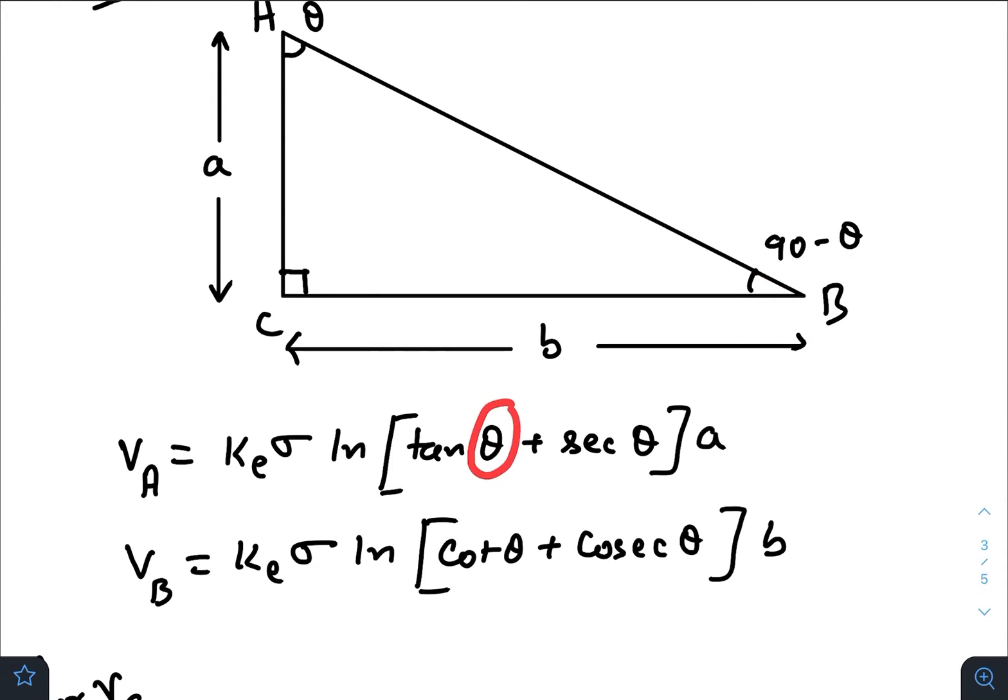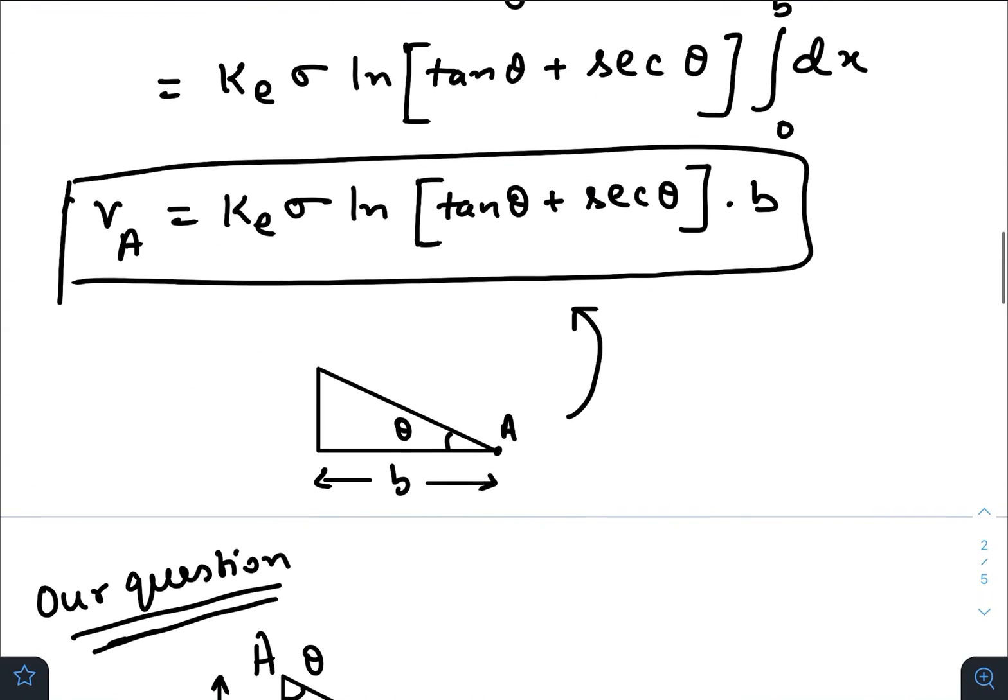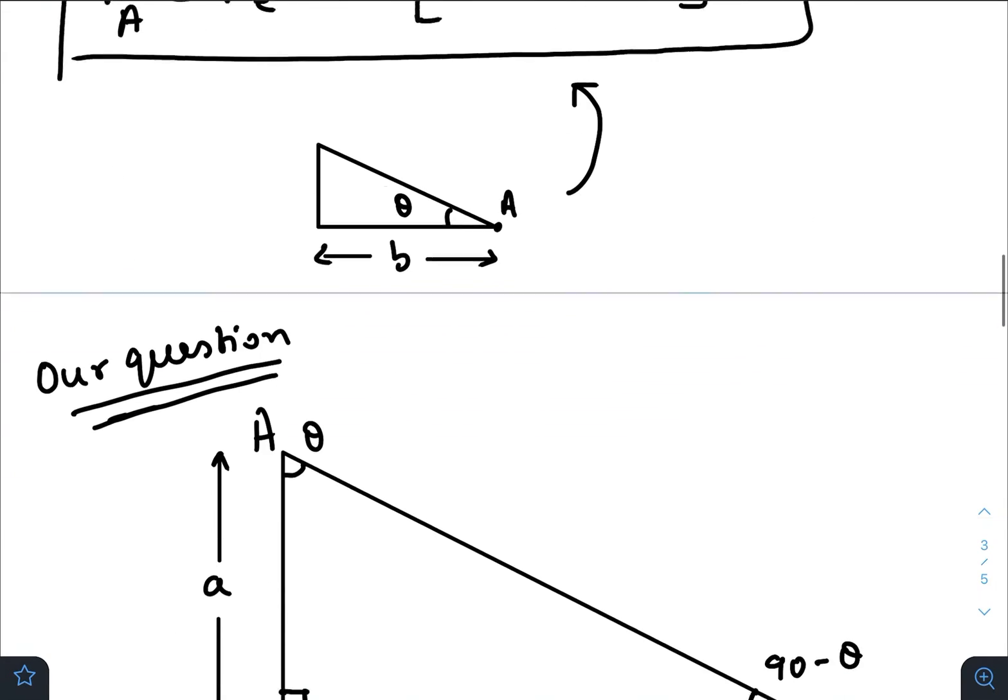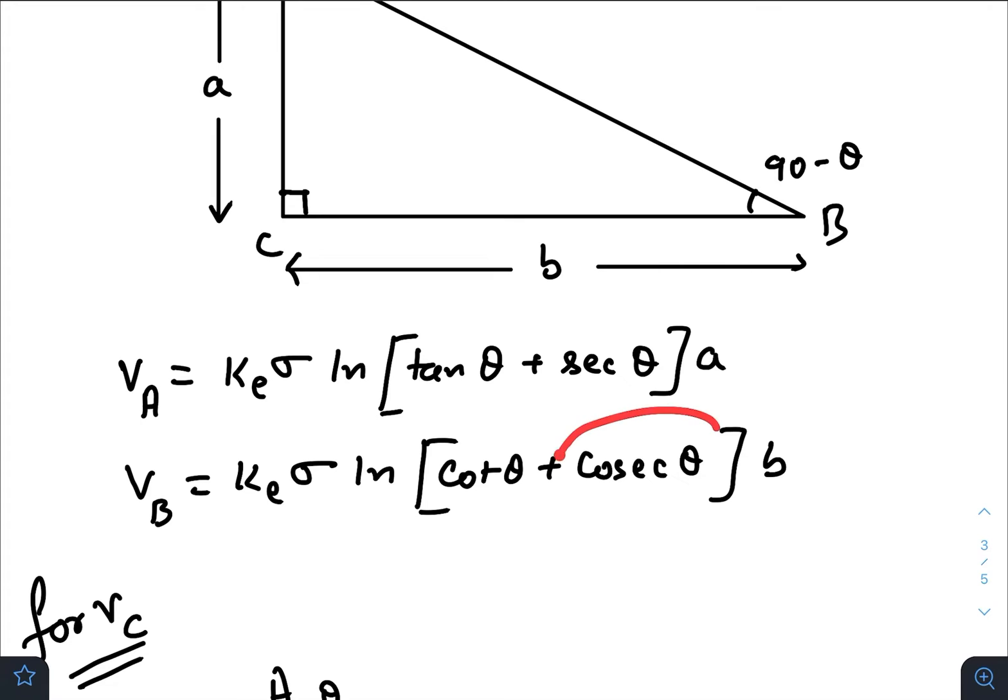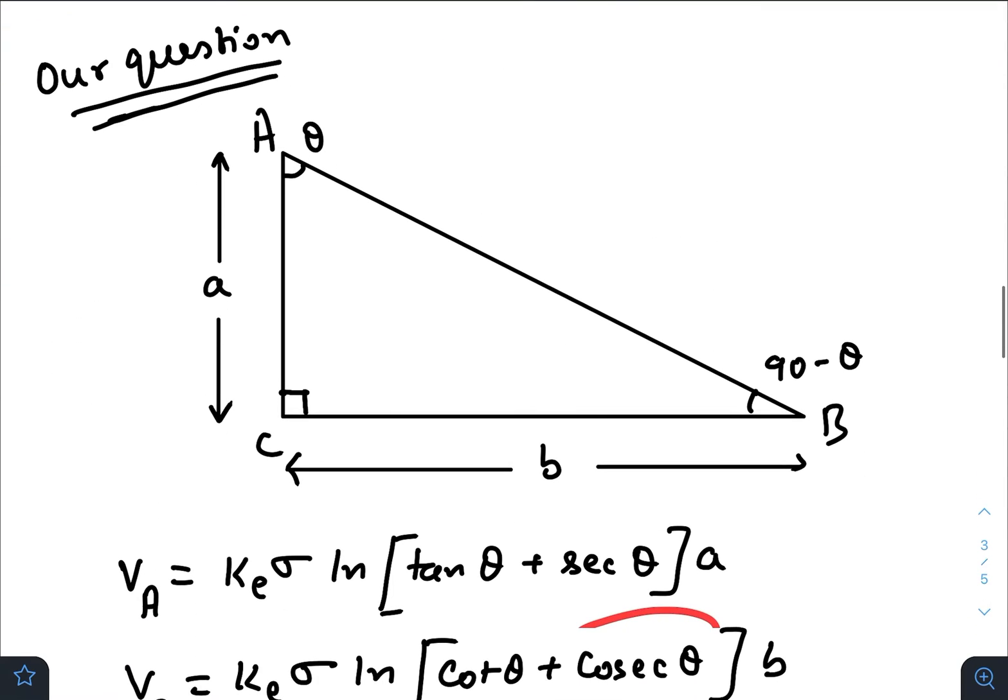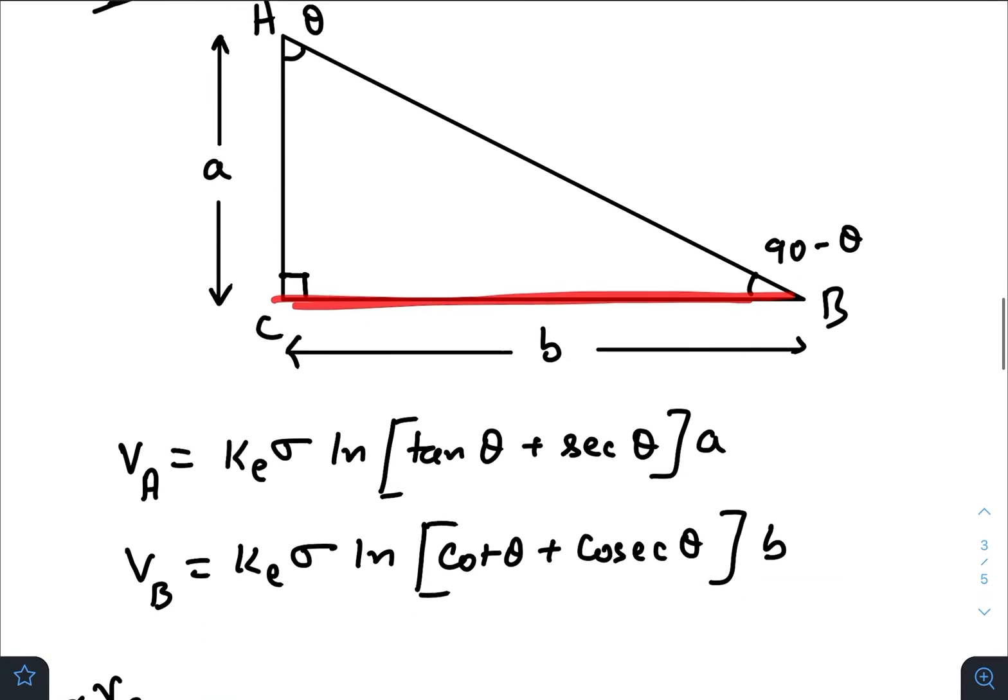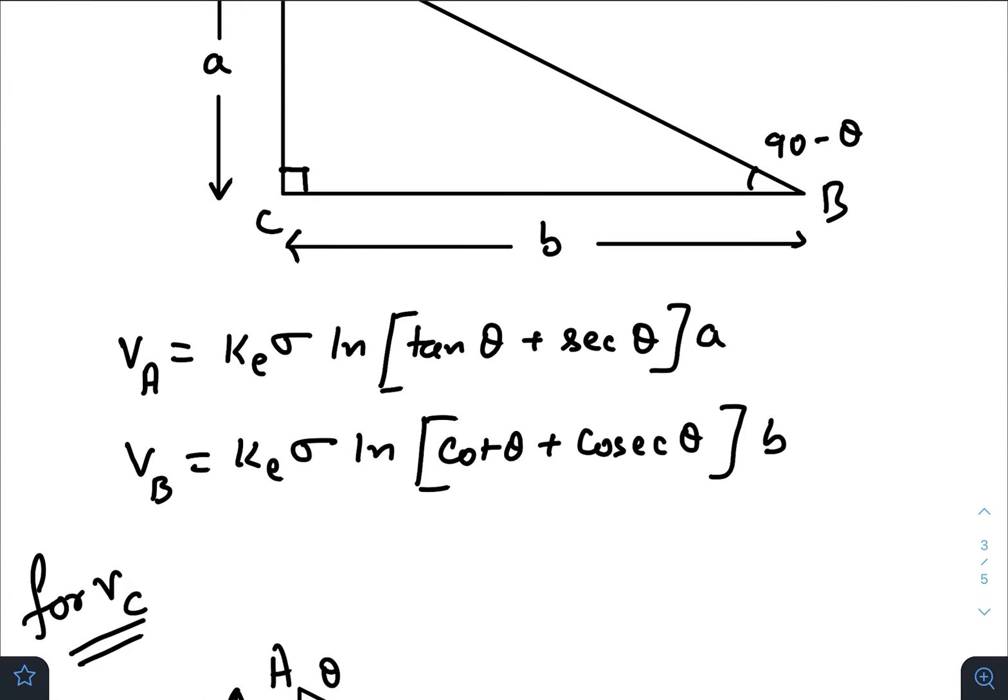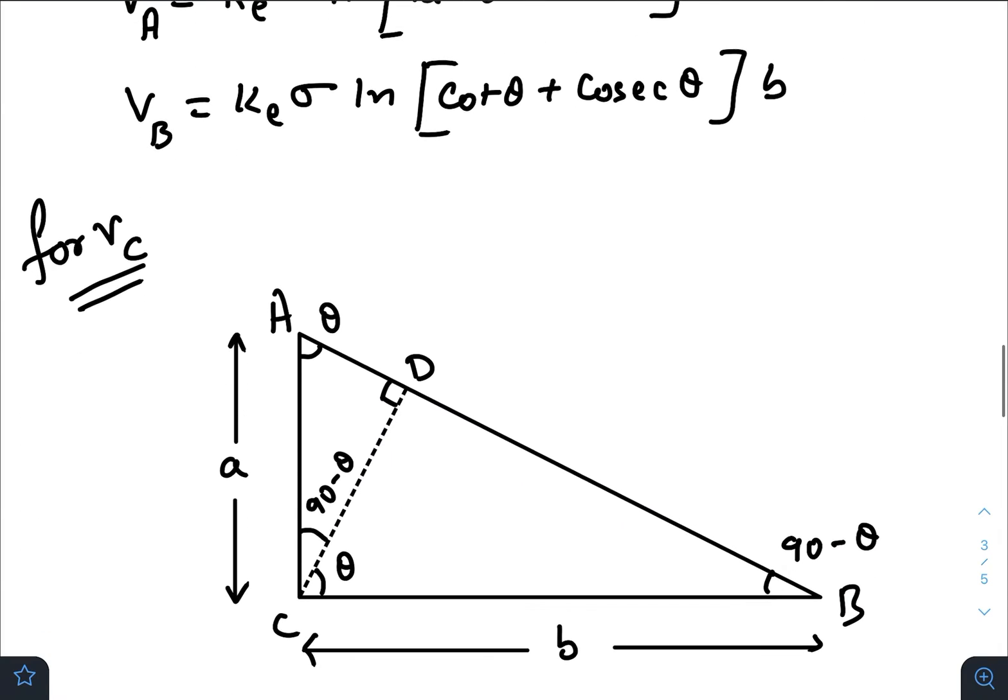So cosec theta times this length of the base. Just take some time—check whether I have written it correct or wrong, whether you all are satisfied with these two expressions or not. Now let us come further; we need to write the potential at point C.